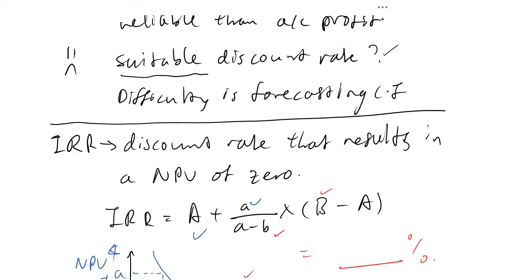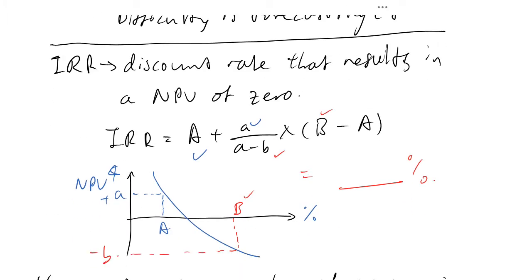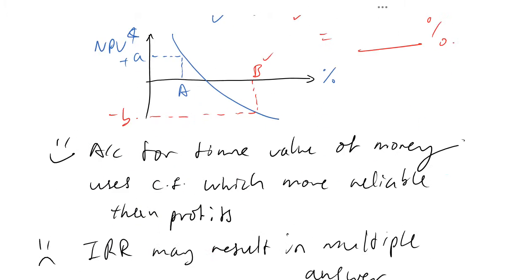The problems of IRR are similar to NPV, except that IRR doesn't suffer from the problem of determining an appropriate discount rate. For IRR, what you need is the discount rate that gives you a positive NPV and the higher discount rate that gives you a negative NPV. Once you have these two sets of values you can easily determine the internal rate of return.